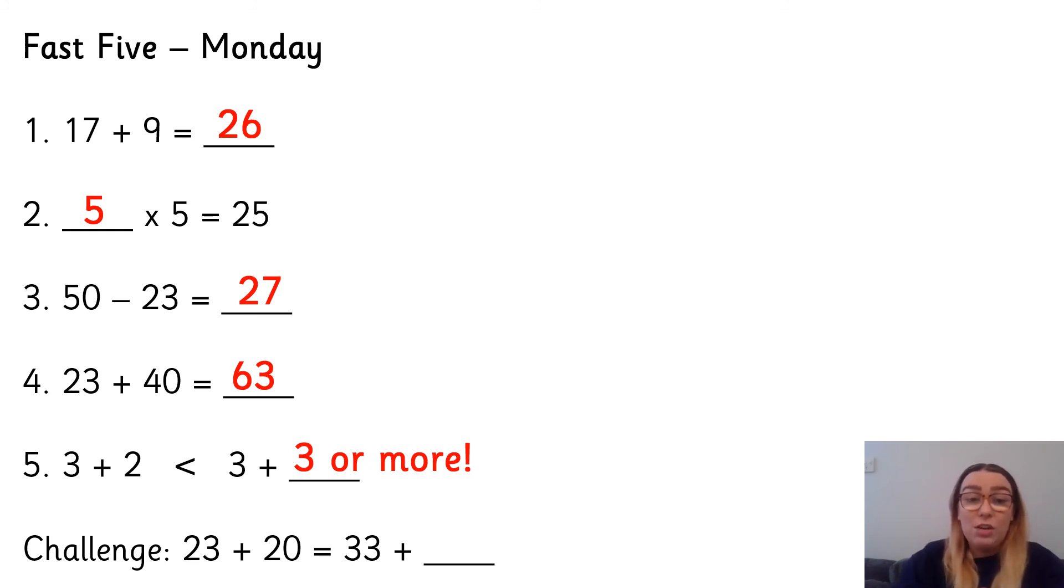And then your challenge question. We've got 23 add 20 on this side, and 33 add something on this side. Now, 23 add 20 is 43. So this side has to equal 43 as well. So what do I add to 33 to get 43? I add 10. Some of you might have noticed that 33 is 10 more than 23. So I've taken 10 from that 20. See, I've taken 10, put it on the 23 to give me 33 add 10. And there'll be more of those questions for the rest of the week.